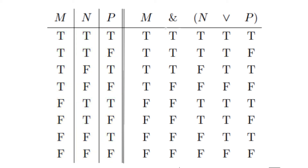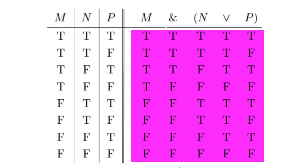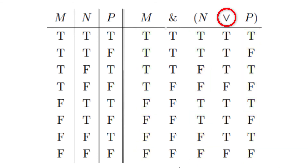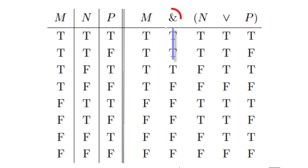Once we've input these values, we move to the right-hand side of the double line, copying the values from the reference columns to the columns underneath the letters for the atomic sentences. Once that's done, we can proceed to calculate the values for the sentence connectives. We start with the V since it has a smaller scope than the main connective, which is the ampersand. Once we've input those values, we can determine the values for the conjunction as a whole, as in the circled column.